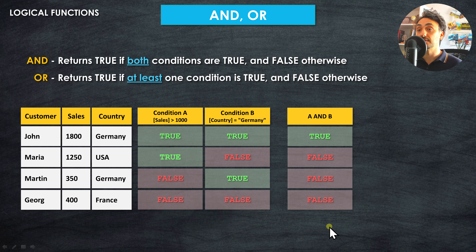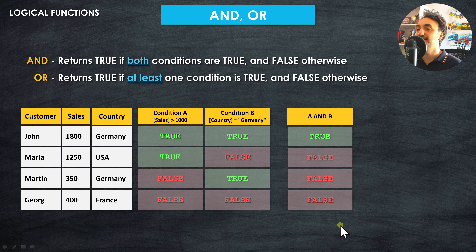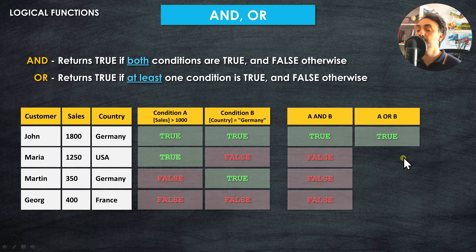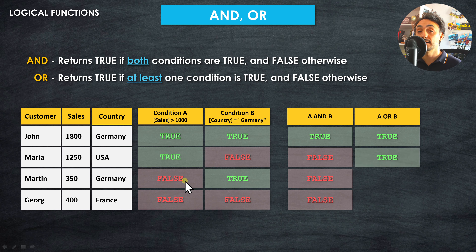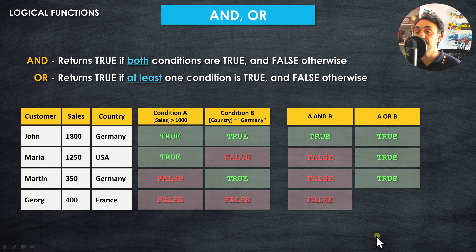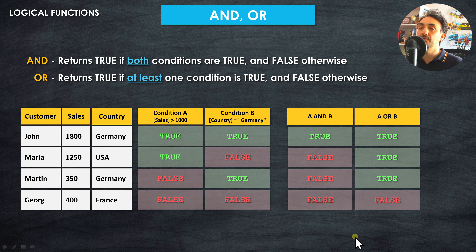The OR operator returns true if at least one condition is true, otherwise false. For the first customer, both are true, so the output is true. For the second customer, condition A is true and condition B is false — we have at least one true, so it's true. For the third customer Martin, condition B is true, so it's also true. For the last customer George, both conditions are false, so the output is false. The OR operator is less restrictive than AND.